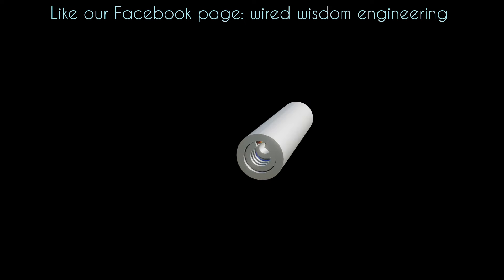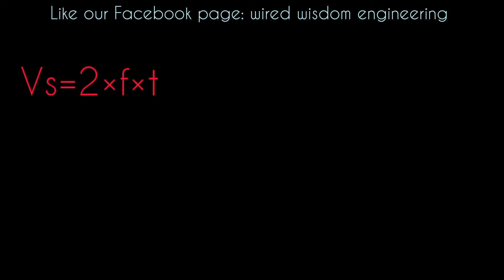First formula is Vs equal to 2 times F times T. Where Vs is linear synchronous speed of magnetic field, T is the pole pitch in meters, and F is the AC supply frequency.